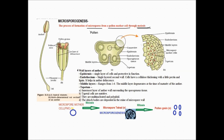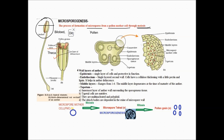Microsporogenesis takes place inside the anther. The anther is bilobed, as we have already studied. If we cut it transversely, we can see this structure — the transverse section of the anther. Each lobe consists of two pollen sacs. These pollen sacs are also known as theca, and that is why the anther is called dithecous.